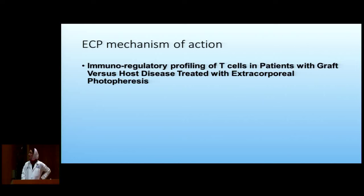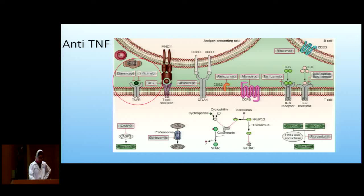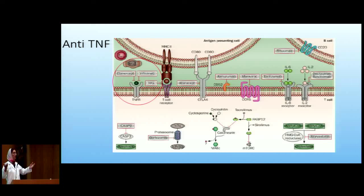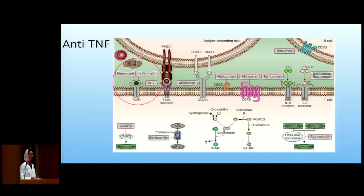Q&A: Regarding daclizumab — yes, I listed multiple options including anti-IL-2, anti-T cell agents, rituximab, and ATG. All have been used in the literature for these patients. But when you look at the numbers, probably only about 20 patients total received ATG across all literature, and maybe 10 received basiliximab — far too small to draw conclusions about what helps or doesn't.